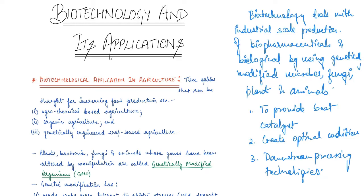Now we are going to see how we apply these methods of biotechnology in various fields. In this video we are going to study biotechnological applications in agriculture. Basically, we have improved agriculture a lot with the help of technology, and there are three options that can be thought of for increasing food production.